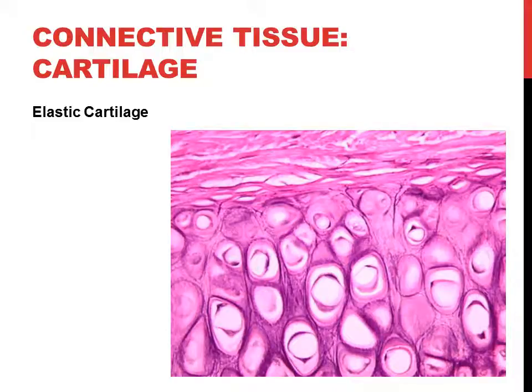Elastic cartilage is nearly identical to hyaline cartilage except it has more elastic fibers, so it can deform and recoil better than hyaline. The two main examples are the external ear and the epiglottis — both structures that can be bent and then recoil back to their shape. Elastic cartilage is a lot like hyaline, just with more elastic fibers.